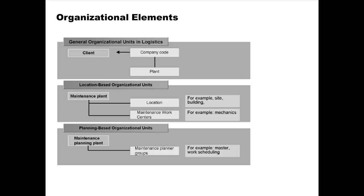There are some important organization elements or levels specific to enterprise asset management. There are of course the general things like client, company code, and plant. All of these are used by the PM module. But there are also some specific organization units in this module.